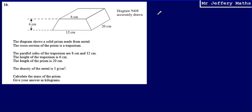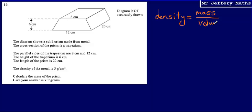First of all, let's talk about density. Density is equal to mass divided by volume — it's the amount of mass that will fit into a certain amount of volume. So density equals mass divided by volume. Looking at the information we've got, the density is 5 grams per centimetre cubed.